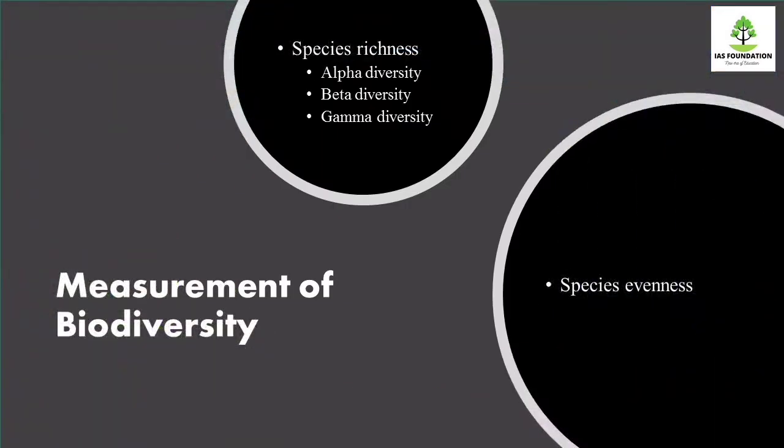If you look at biodiversity, there are two categories: species richness and species evenness. Species richness means the number of species in an area. There are three categories of species richness: alpha diversity, beta diversity, and gamma diversity.